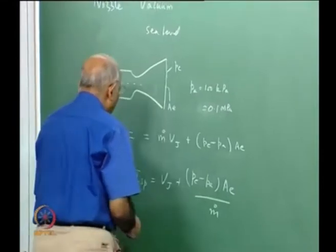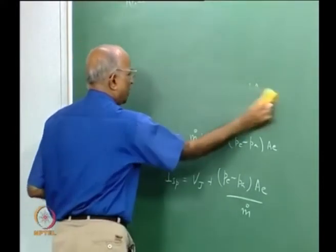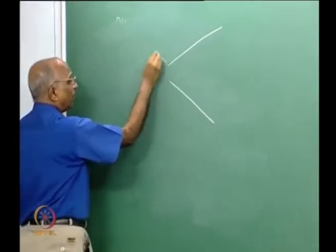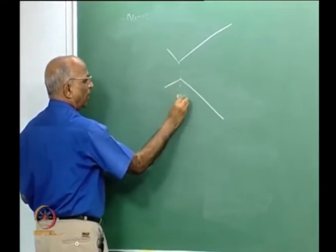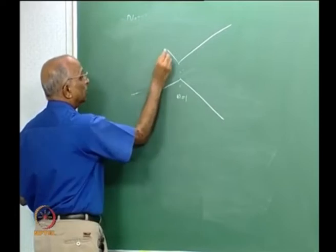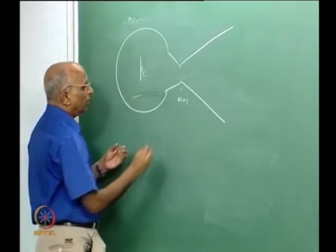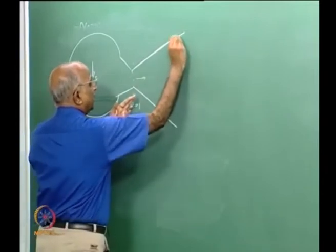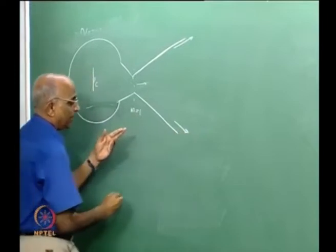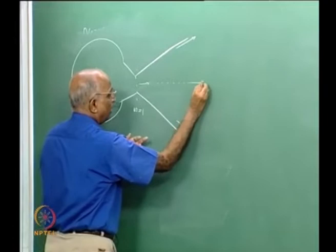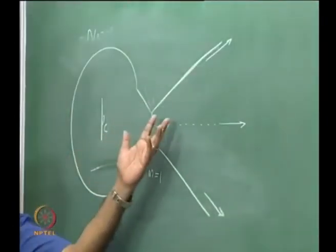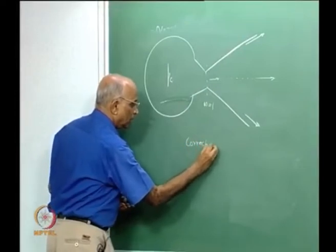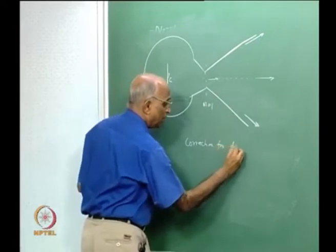So far we have assumed one-dimensional flow — all gas flows straight along the axis. But in a real divergent nozzle, gas near the wall flows at an angle to the axis while gas along the centerline flows axially. This means one-dimensional flow is not strictly correct, and we must make corrections for the radial component or divergence of the flow, since not all thrust acts in the axial direction.